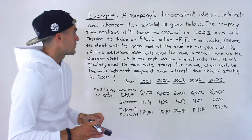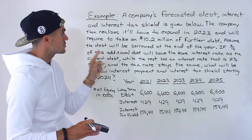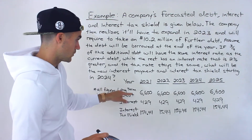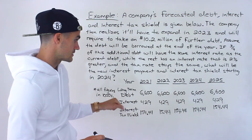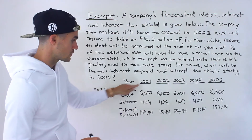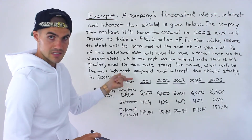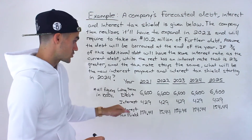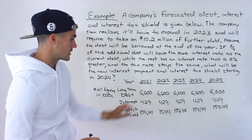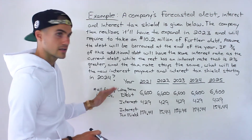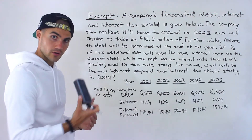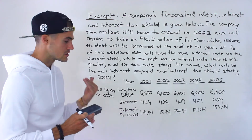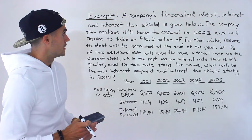So what are we working with here? We have a company's forecasted debt, interest, and interest tax shield given in this table. All these figures are in thousands. The debt is staying consistent at 6,600 — which is really 6.6 million. On that debt, the company pays interest, and those interest payments aren't changing, meaning the interest rate is the same. And because the company is paying interest, they can deduct that on the income statement, lowering earnings before taxes — so there's an interest tax shield.